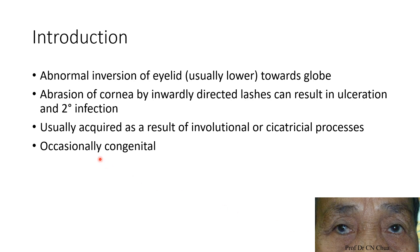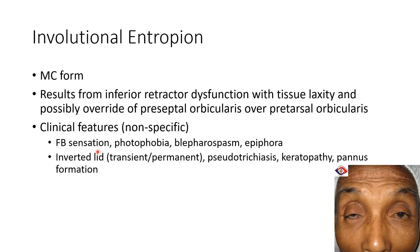Entropion can occasionally be congenital. Now let us discuss about the various types of entropion. First, involutional entropion — it is the most common form of entropion. It results from inferior retractor dysfunction with tissue laxity and possibly override of preseptal orbicularis over pretarsal orbicularis. This picture shows a case of involutional entropion.